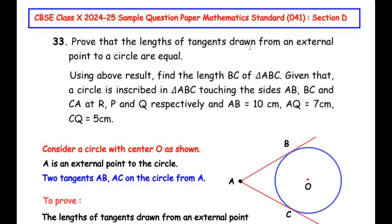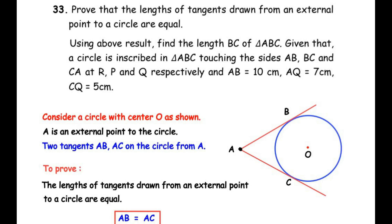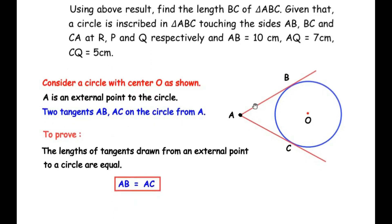Since we have to prove that the lengths of the tangents drawn from an external point to a circle are equal, we have drawn a figure and written: consider a circle with center O, and A is an external point to the circle, meaning A is a point outside the circle. Through this external point, two tangents AB and AC are drawn to the circle. We have to prove that the lengths of the tangents AB and AC drawn from external point A are going to be equal.